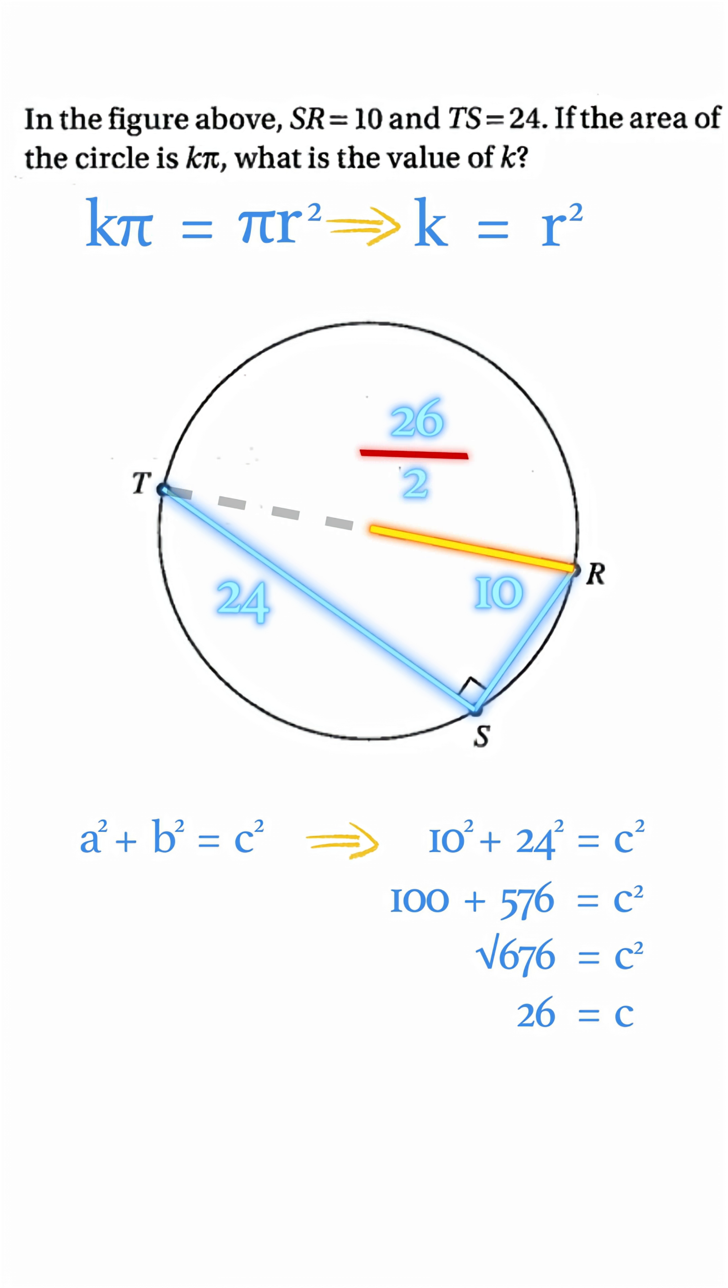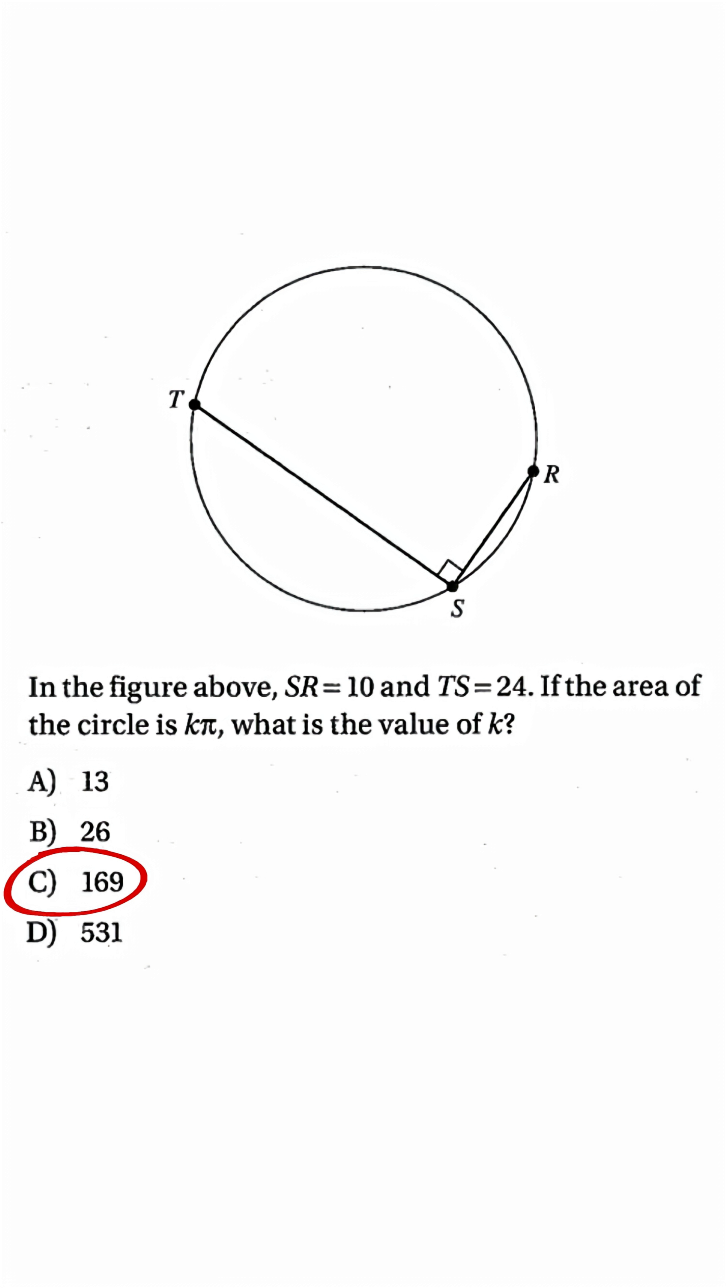Finally, square 13, which gives us the answer 169. Making k equal 169. There you go. Another most missed SAT question? Handled.